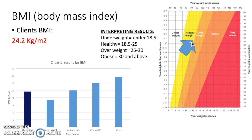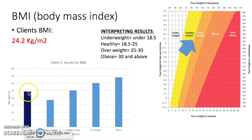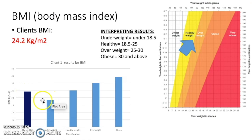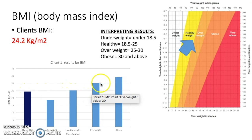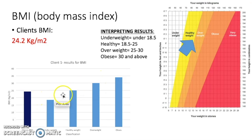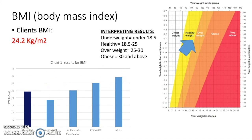One of his goals was to lose weight, so I could work with him to reduce his BMI slightly, meaning his score would be more comfortably in the healthy area. On the graph, his BMI of 24.2 is shown in dark blue alongside the underweight, healthy weight, overweight, and obese categories. He is in the healthy weight category, which is what we want — so that is really good.